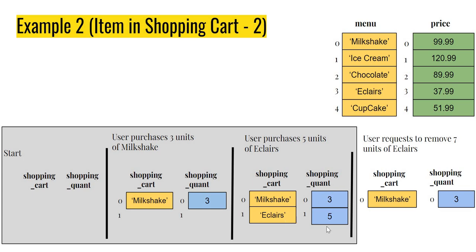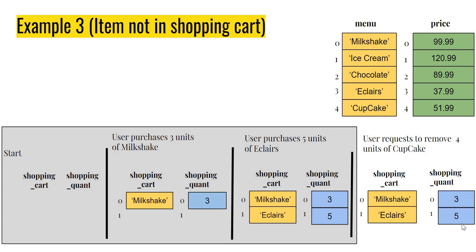Next scenario: the user has chosen five eclairs but wants to remove seven. Clearly removing seven is not possible, however we can remove five — since five is less than seven — which means eclairs will be empty in the cart. We must then remove eclairs from the shopping cart entirely, otherwise we'd end up with a zero entry.